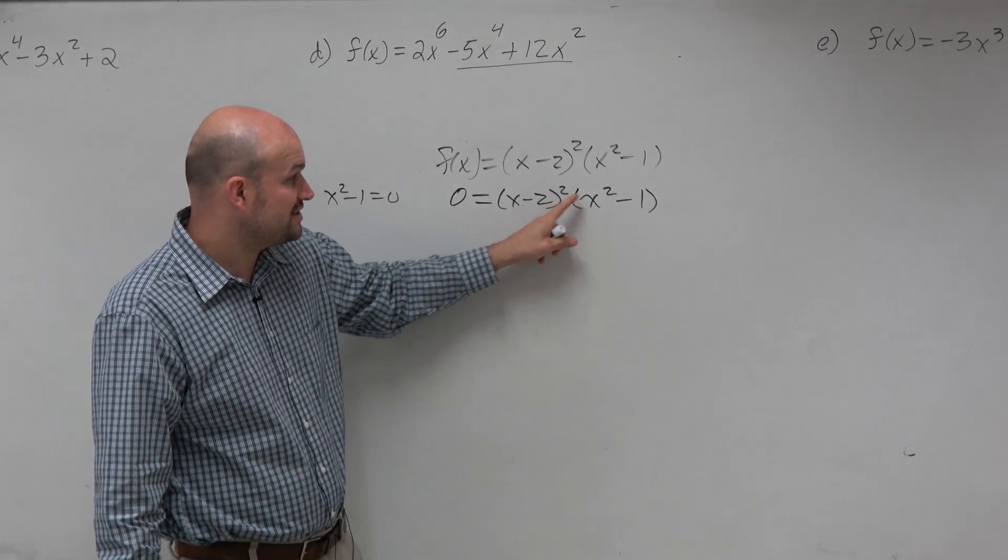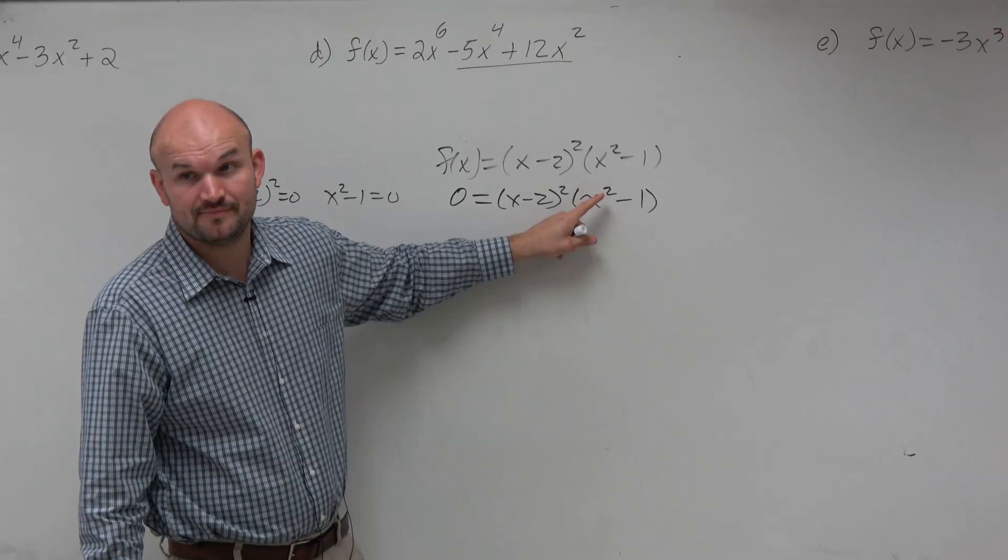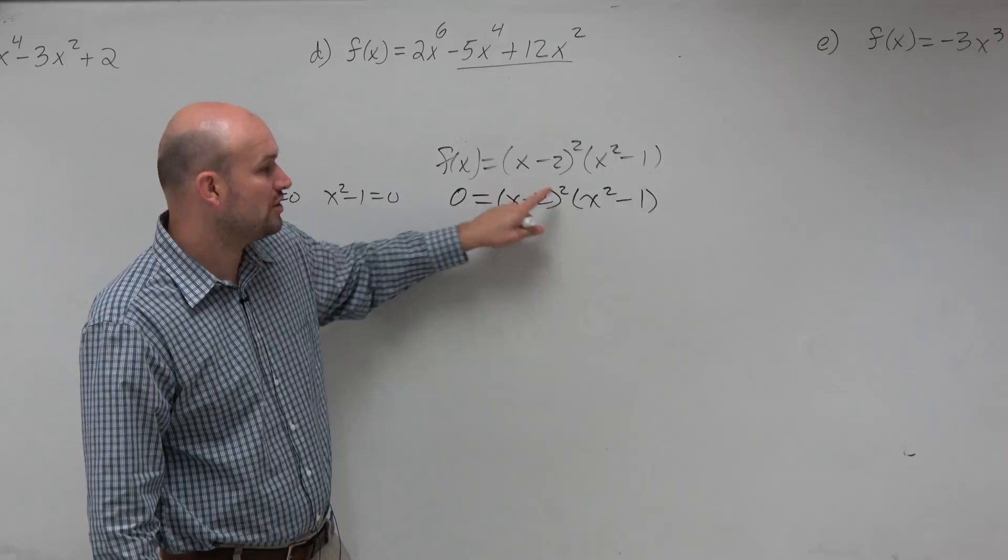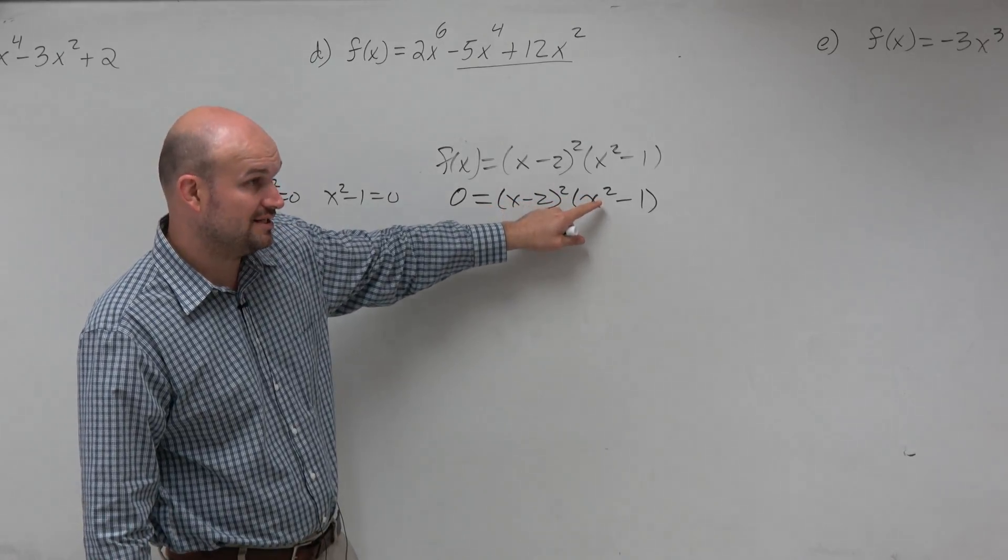Here, the power is of the factor. Here is the power of the variable. They both don't represent multiplicity. The only thing that represents multiplicity is the power of the linear factor. That is not a linear factor.